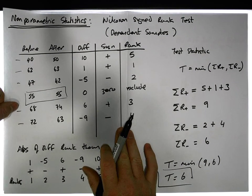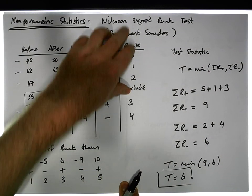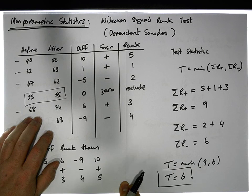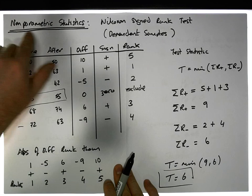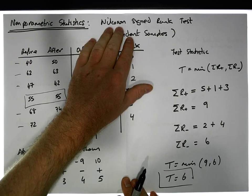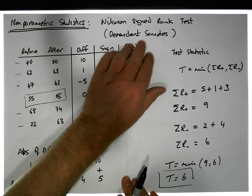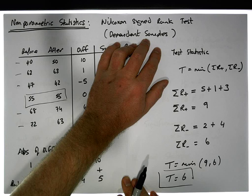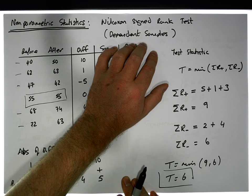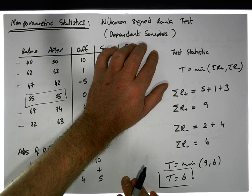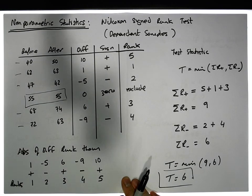This is John Lambert with the Mathematics Development and Support Service at the National College of Ireland. This short video, another video in our series dealing with nonparametric statistics, was concentrating on the Wilcoxon signed rank test, which is a dependent samples test when we violate the assumptions associated with our parametric paired samples t-test. Thanks for watching, bye bye.